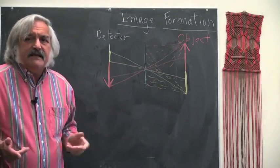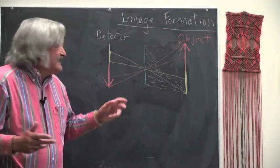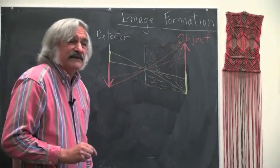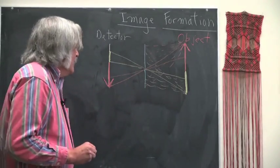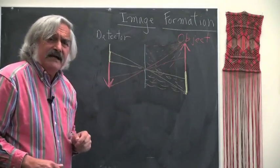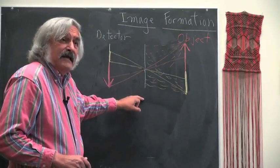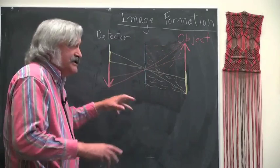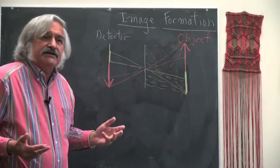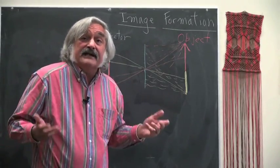Now, one of the big disadvantages of a pinhole is that it's a pinhole. There's just a little, teeny amount of light going through that. Wouldn't it be great if instead of wasting all of the light that gets blocked by the pinhole, we could actually use that light and form an image with many more photons and therefore in a much shorter period of time? Well, that's exactly what a lens does.